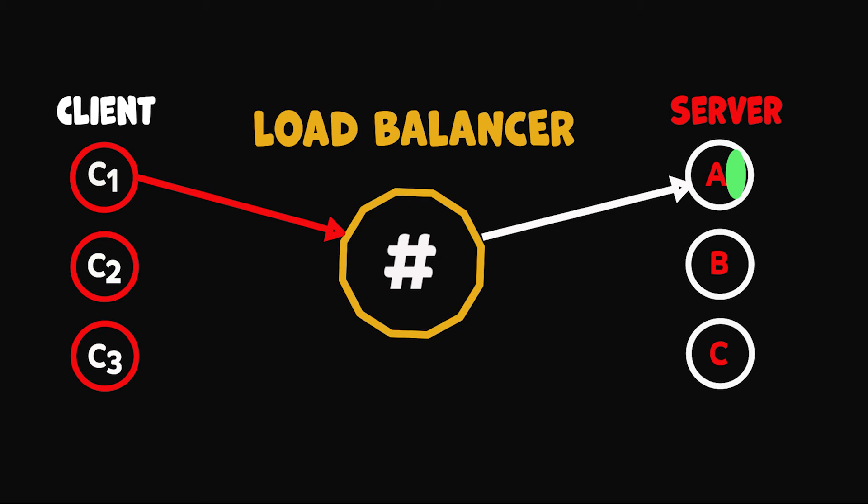We can hash each of the client requests coming to the load balancer and based on the hash value, we can route the request according to the position of the server. For the sake of simplicity, let's say we have a hashing function given to us, which takes the name of each client and transforms it to an integer value.